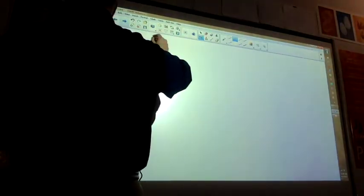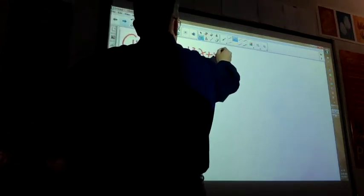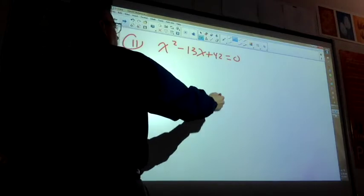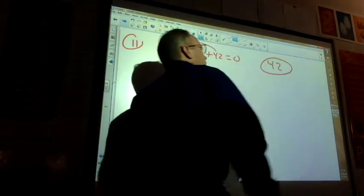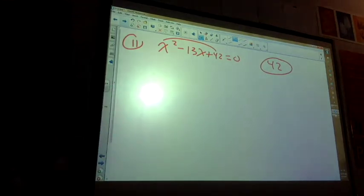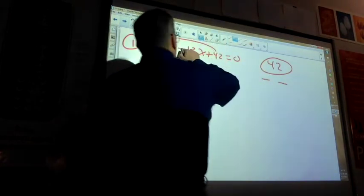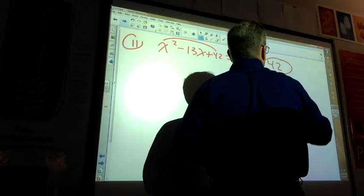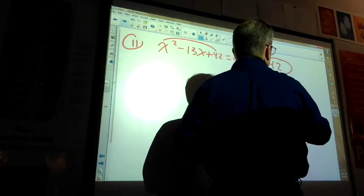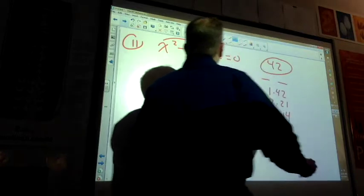Number 11, you have x squared minus 13x plus 42 equals 0. Magic number is 42, right? It's positive. So I need either positive, positive, or negative, negative. Which should work? Why does the negative, negative work? What sticks out? That right there, right? So, 1 and 42, 2 and 21, 3 and 14, and 6 and 7. Which one works? 6 and 7 that are both negative, right?